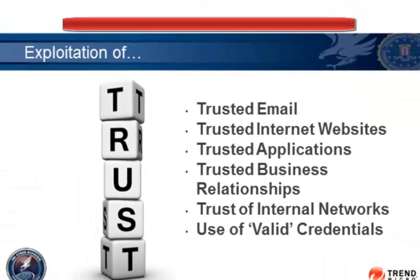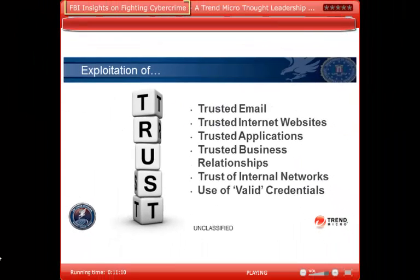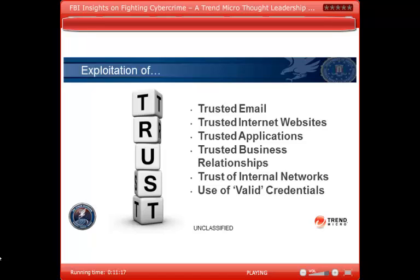Our opinion is that the real root of the cybercrime problem comes down to an exploitation of trust. We've built all these sophisticated networks and we have the best intrusion detection systems out there, but they're only as good as the people using them. When that's exploited — meaning people getting spear phishing emails — that is the human factor that is the weakest link in cybersecurity right now, and we're all responsible.